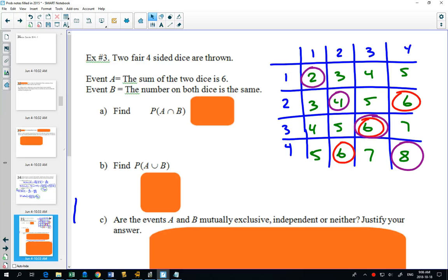If we draw out all the possibilities of a four-sided dice and the sums that you could get, this is a very helpful strategy for us to visualize what's happening. Event A, the sum of the two dice is six. I've circled those in red. Event B, the number on both dice is the same. I've circled those in purple.